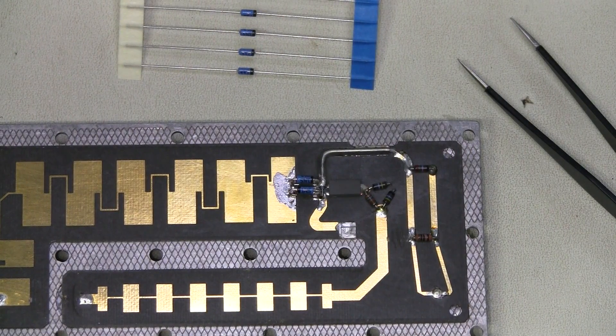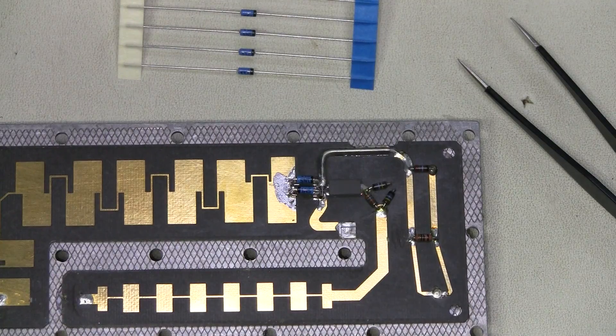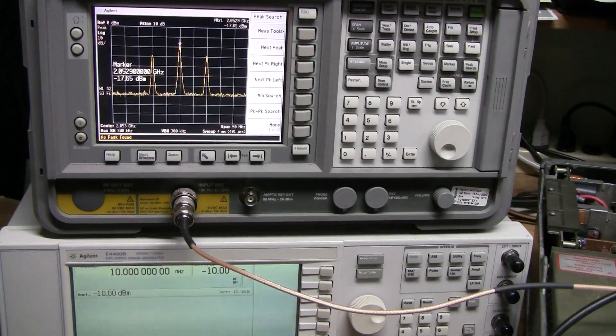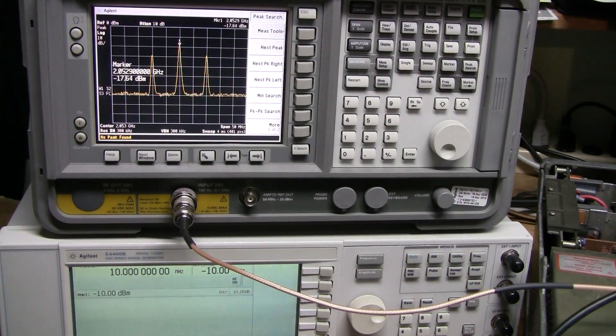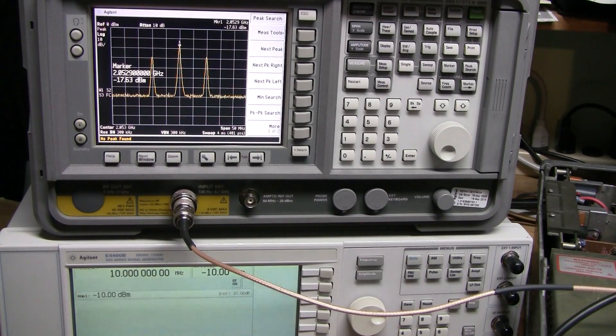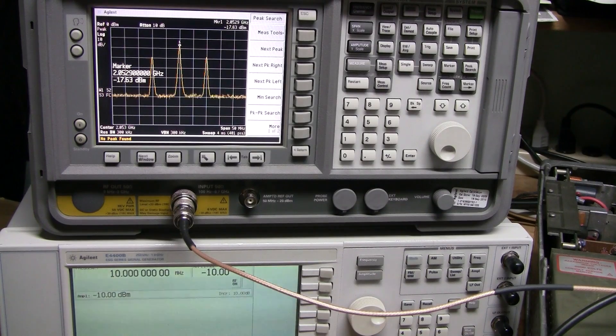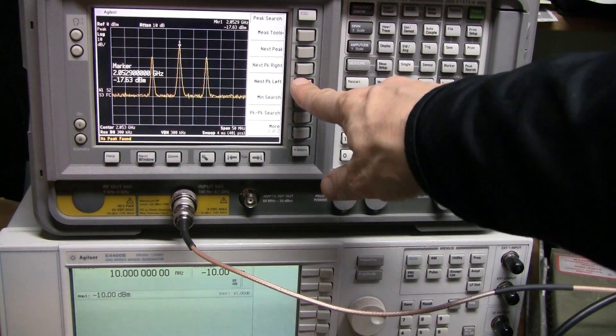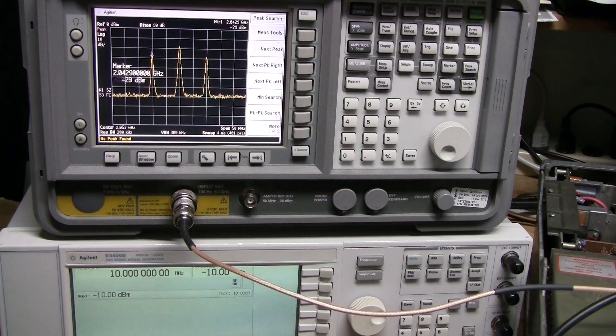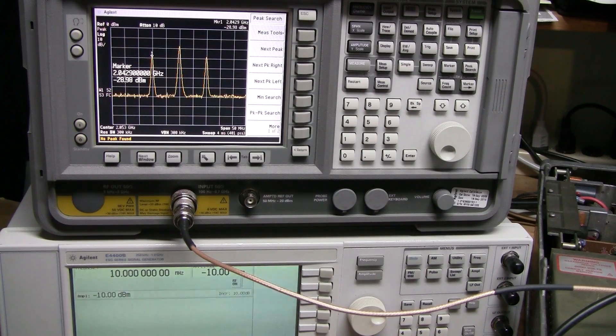Check it out. The LO feed-through is gigantic. About minus 17.6 dBm. And let's look at the signal. About minus 29 dBm. This column. No wonder. This is the worst performance we've seen so far, except the blown diodes.